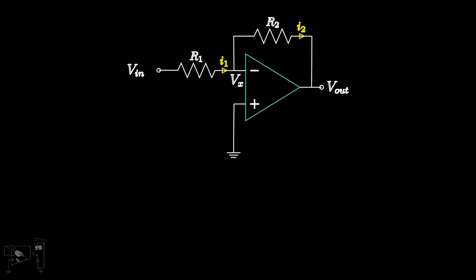Since the op-amp is ideal, no current flows through the input terminals. Hence, this current I1 has only one path to follow. That is through R2, towards the output node. To find the value of this current, we can write a Kirchhoff's current law at node Vx.